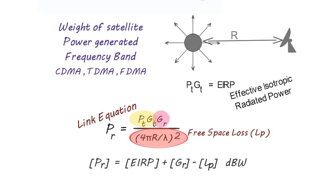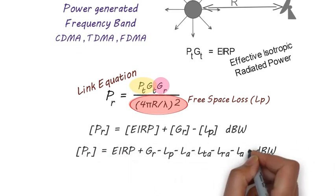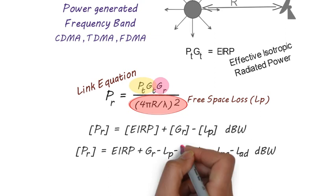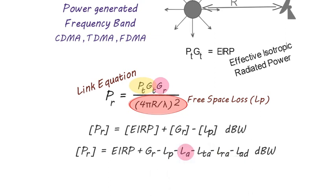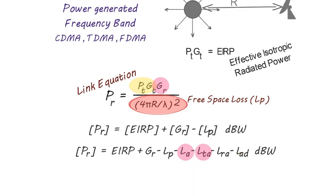If we consider all the losses encountered in the system, then the received power PR can be given like this formula. Here LA is attenuation or atmospheric loss. LTA is losses associated with transmitting antenna.